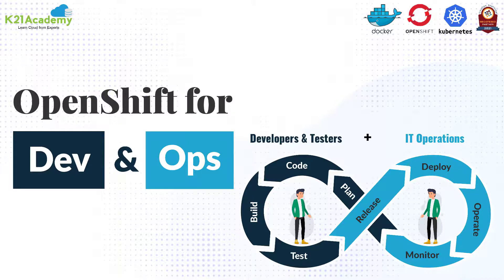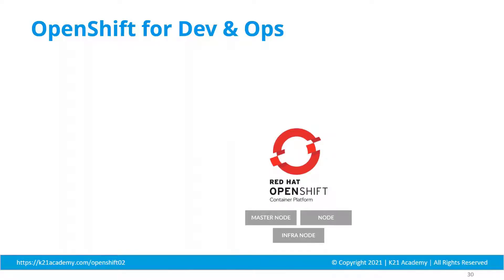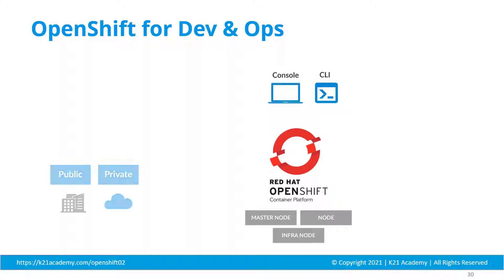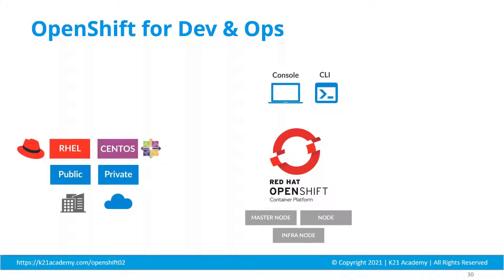So, OpenShift for DevOps. You can see there is an infra node, master node, and a normal node. On top of that, Red Hat OpenShift content platform is deployed. You can access this Red Hat OpenShift using the console as well as the CLI, so you have both options. You can deploy this on the public cloud as well as private cloud.